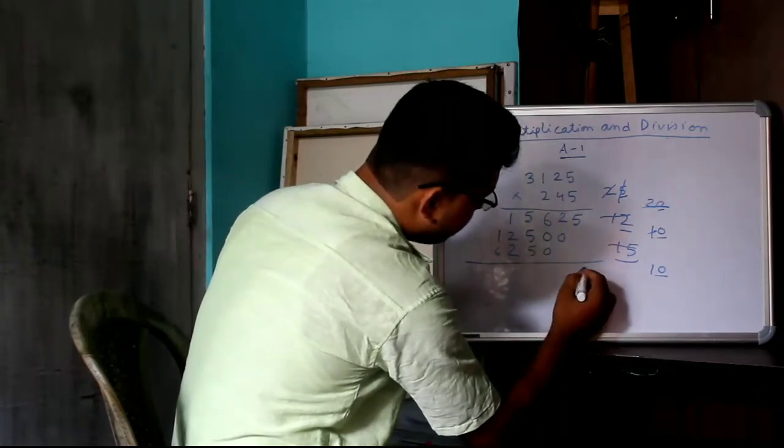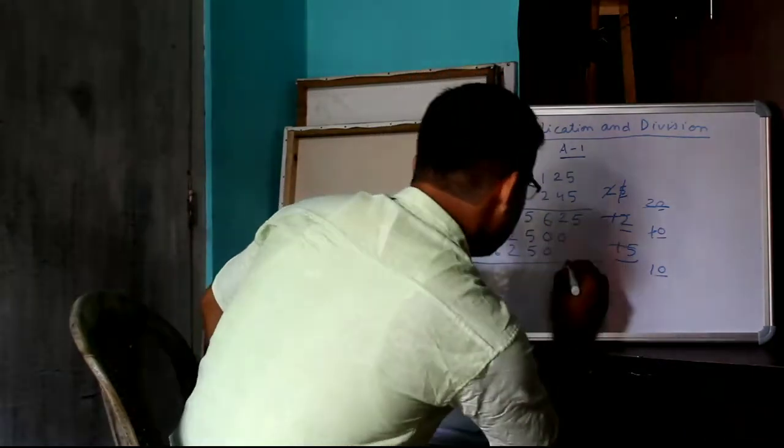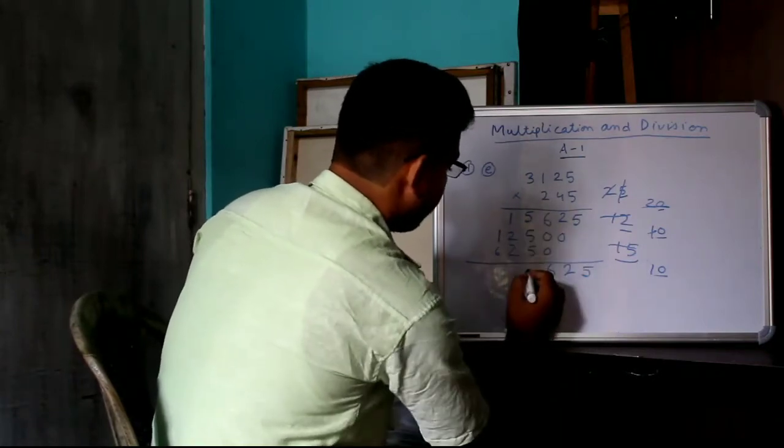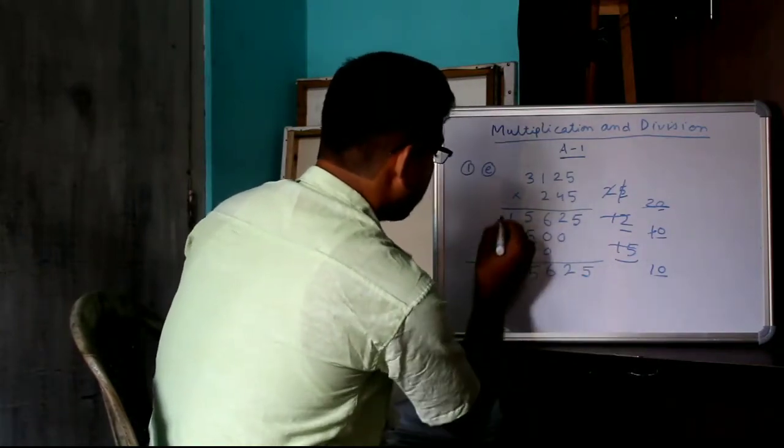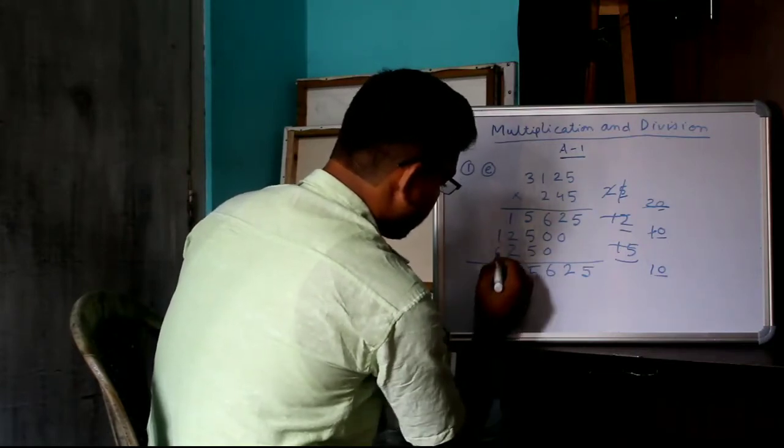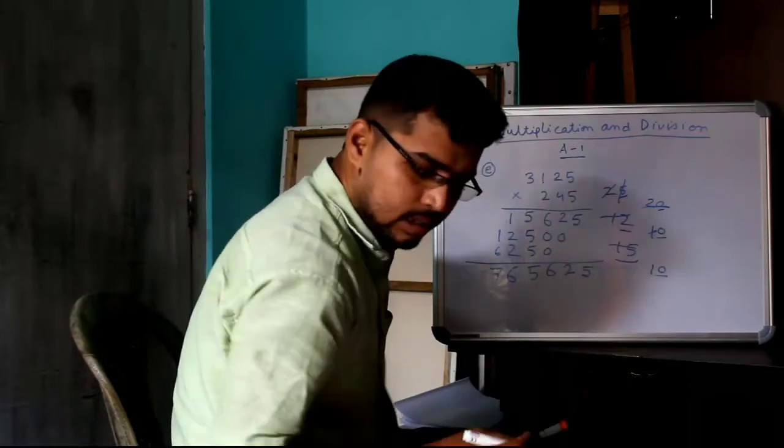Now, add this. 5, 2, 6. 15, 5. 1, 1, 1, 1, 2. 2, 2, 4, 6. 6 plus 1, 7. So, this is the answer.